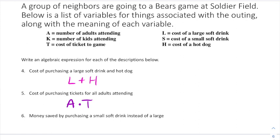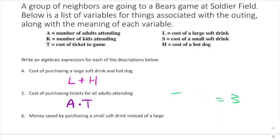Number six: money saved by purchasing a small soft drink instead of a large. Say a small costs $2 and a large costs $5. To find the difference we subtract — but 2 minus 5 gives negative three, which doesn't make sense. Five minus 2 equals $3, which is the difference in cost. So we take the cost of a large minus the cost of a small: L minus S.